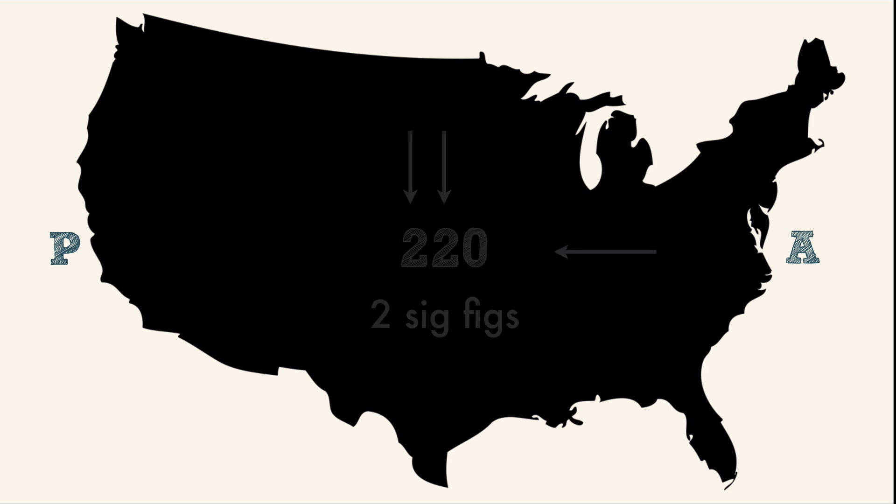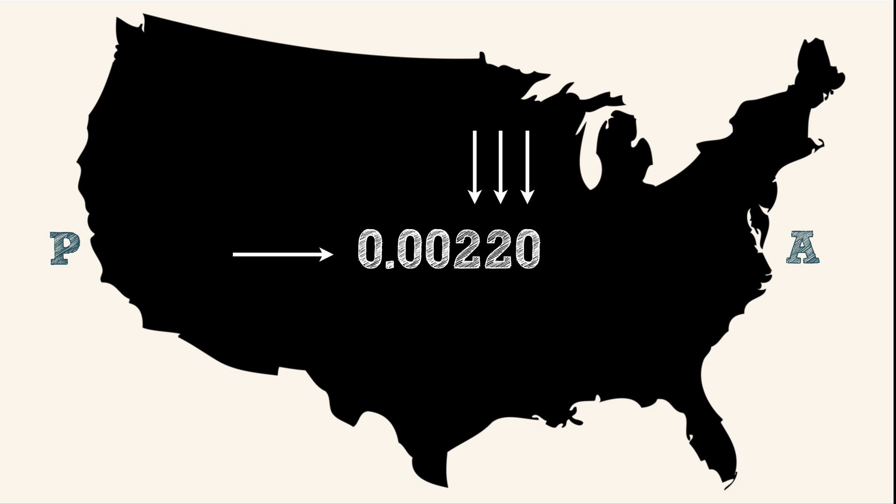Now let's try this number: 0.0022. The decimal is present, so we'll start counting from the Pacific side. Again, we can't start by counting zeros. Always start when you reach the first non-zero digit, which is the 2. We have 1, 2, 3 sig figs because the zero after the decimal point counts. An easier way to see that this has three sig figs is to put it into scientific notation. Here it's much easier to see the three significant figures.